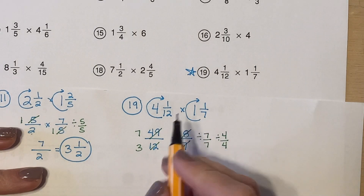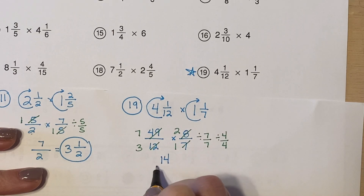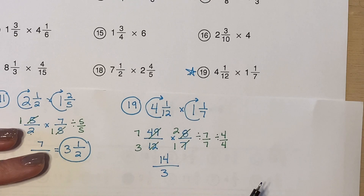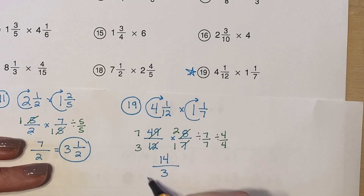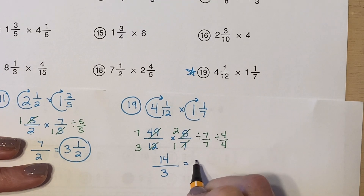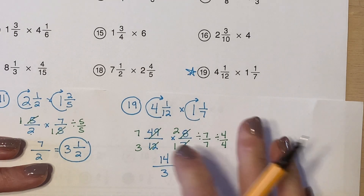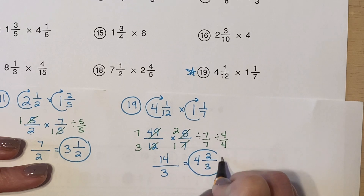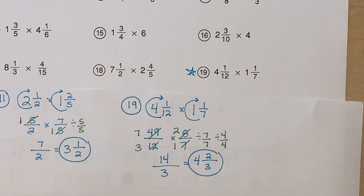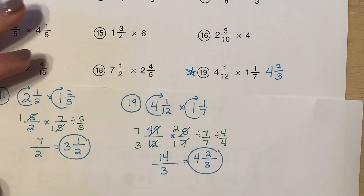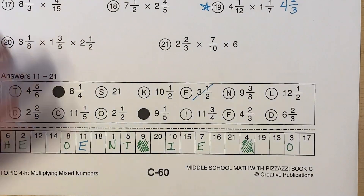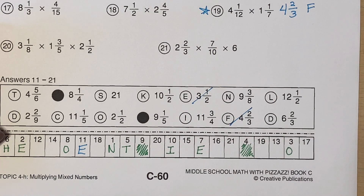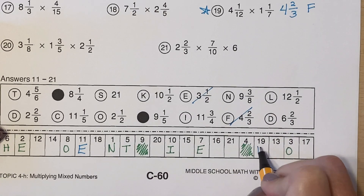Now I'm going to multiply straight across: seven times two is fourteen, three times one is three. You see why it's so important to stay nice and neat, because there are a lot of places where we could get messed up with messy handwriting. Let's go ahead and simplify fourteen-thirds. How many times does three go into fourteen? It goes in four whole times, bringing us to twelve. Remove twelve from fourteen — that gives two leftovers, and the denominator stays three: four and two-thirds. Looking at the answer key, four and two-thirds is answer F. Nineteen is F.